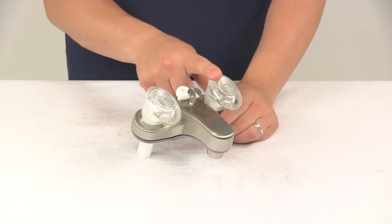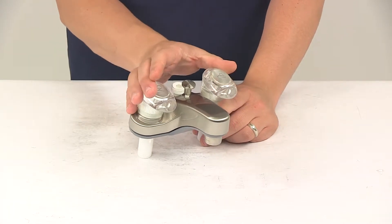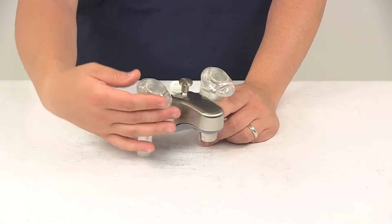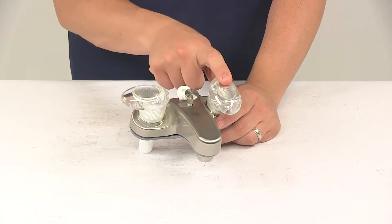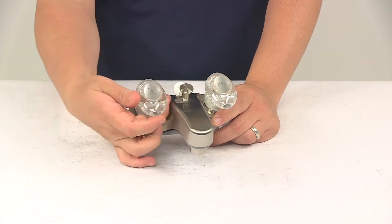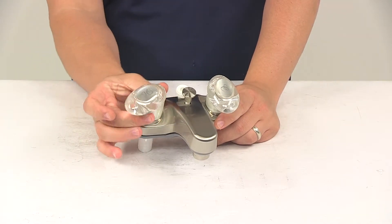It features dual acrylic levers—these are the handles that give the unit a really nice look. Each one has the hot and cold indicator on there, so H on this one for hot, C on this one for cold. It has a nice quarter-turn design.